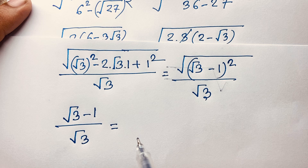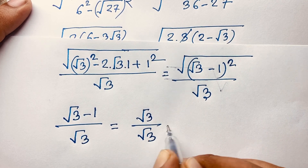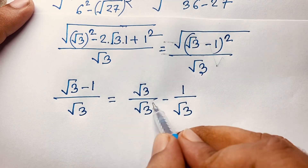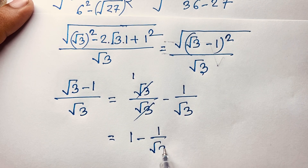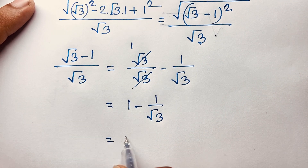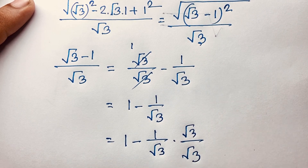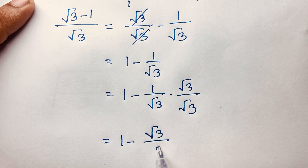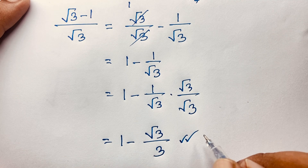Taking the square root of (square root 3 minus 1) squared gives square root 3 minus 1, since it is a positive value. So we get (square root 3 minus 1) over square root 3. Separating: 1 minus 1 over square root 3, then multiplying by square root 3 over square root 3 gives 1 minus square root 3 over 3. This is our final answer.